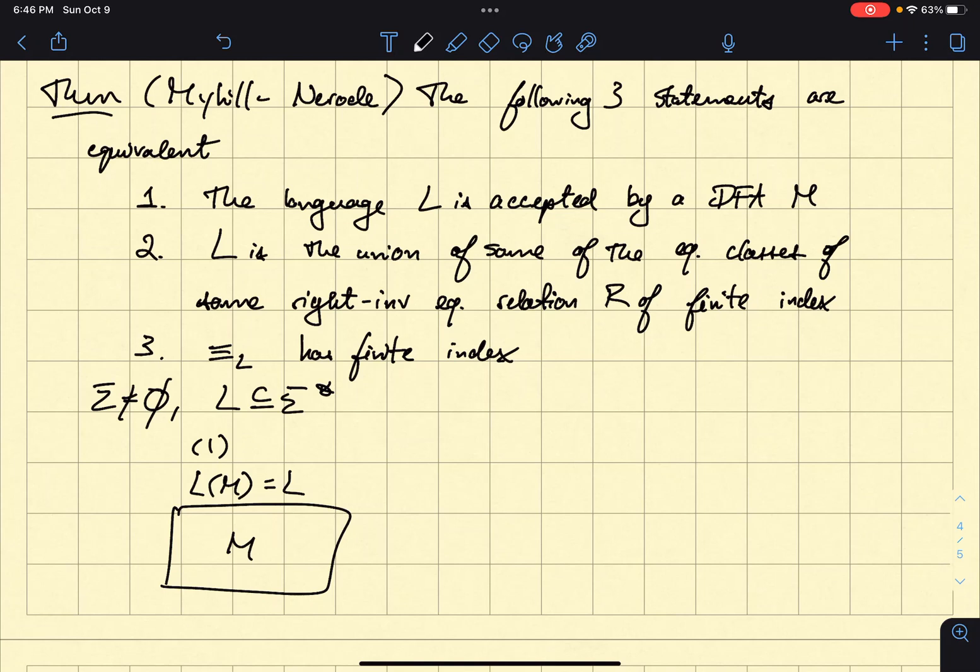And then Myhill-Nerode says one if and only if two. Okay. And what does two say? Two says, sorry, two says that I have R, which is an equivalence relation. Okay.